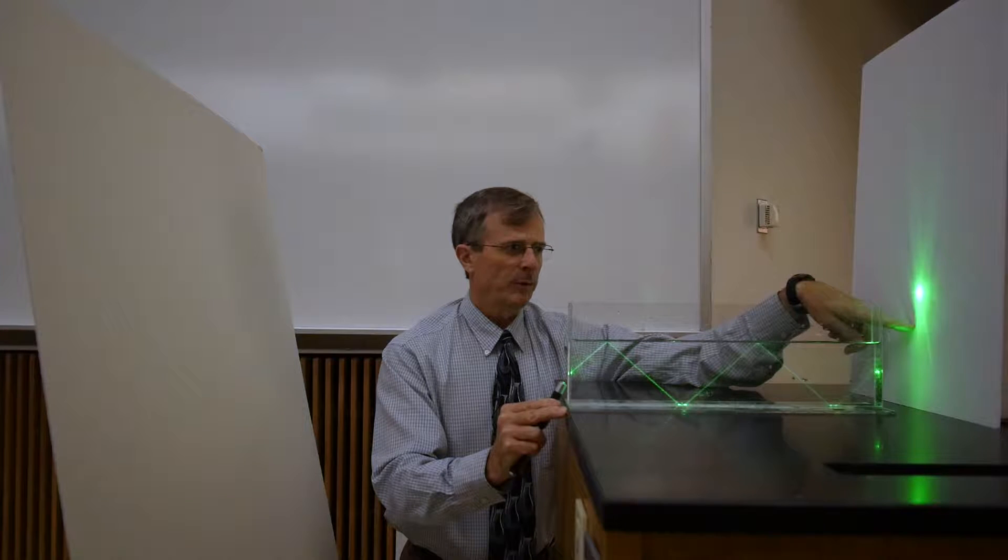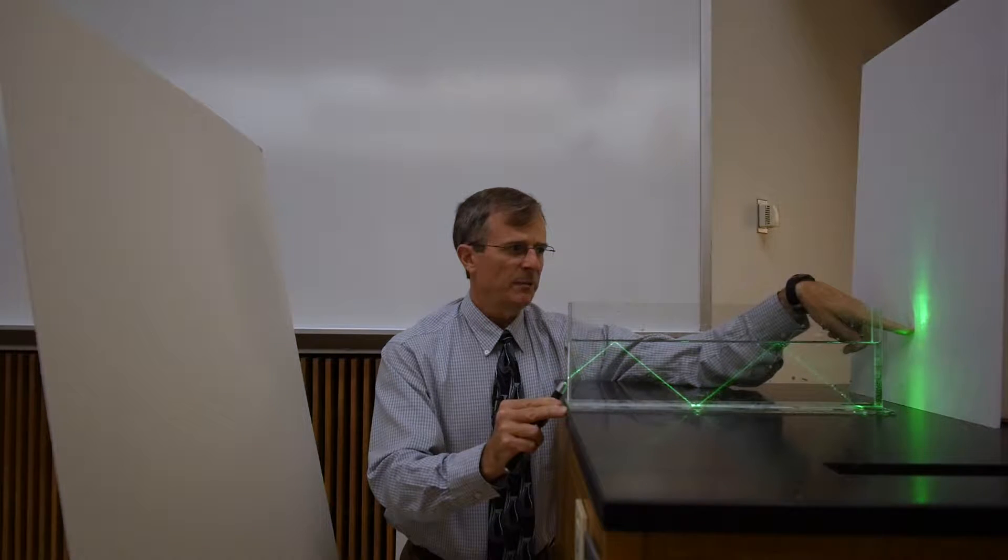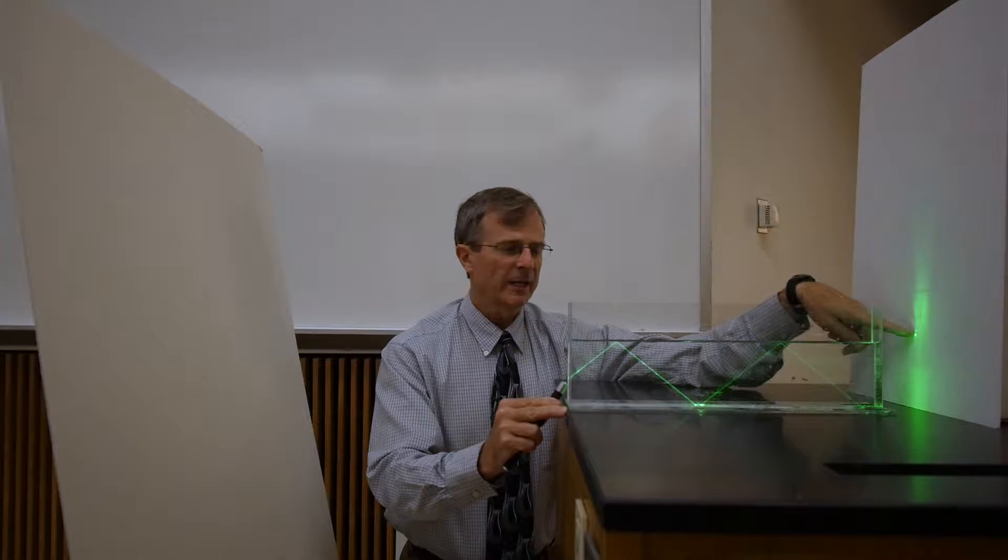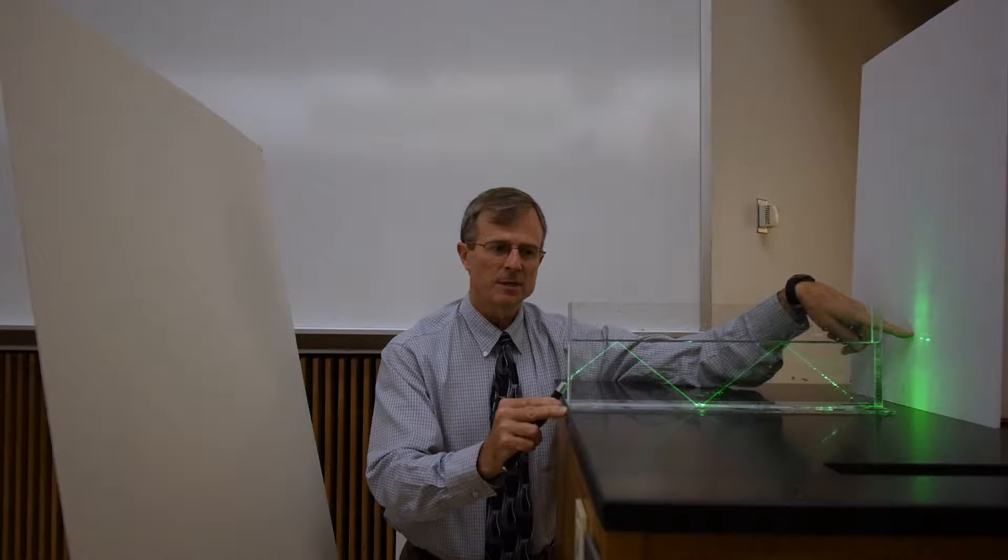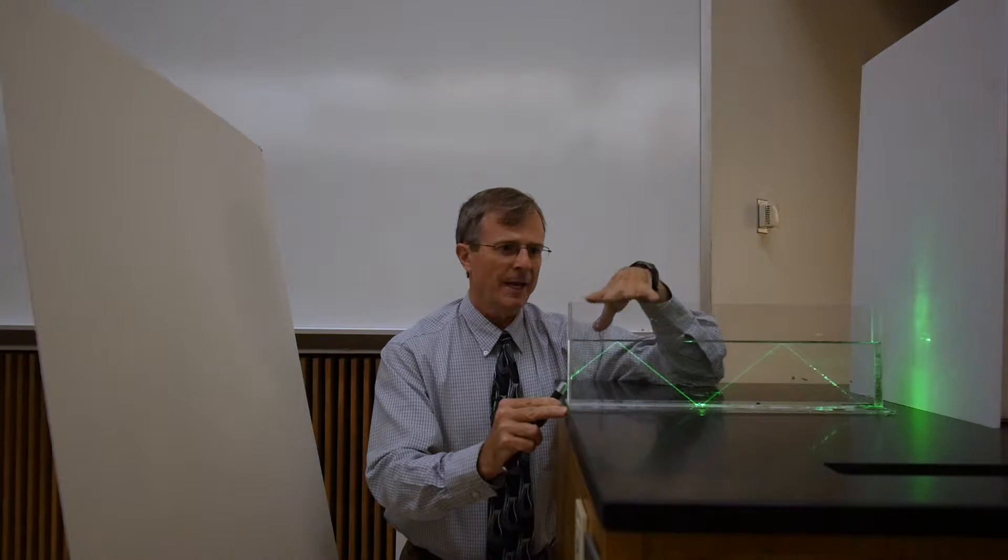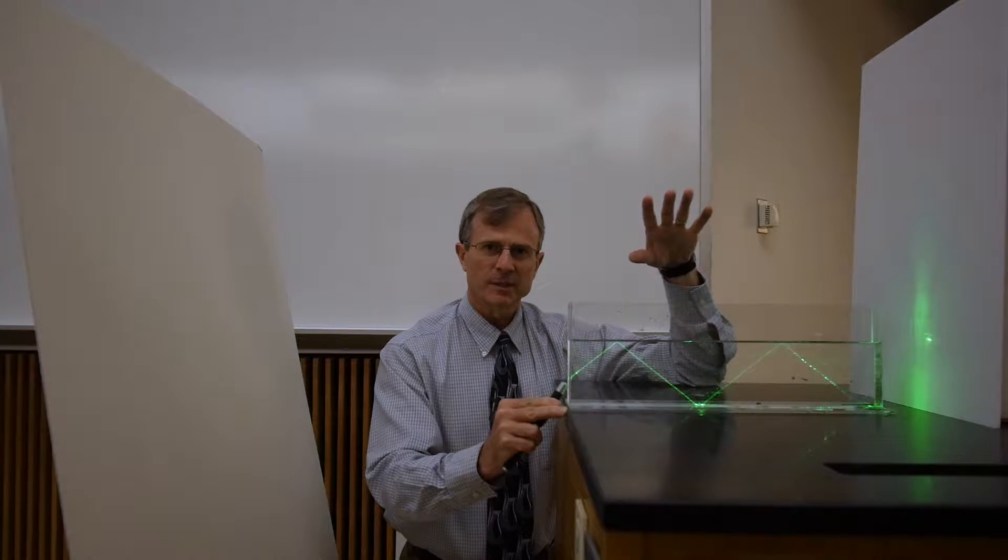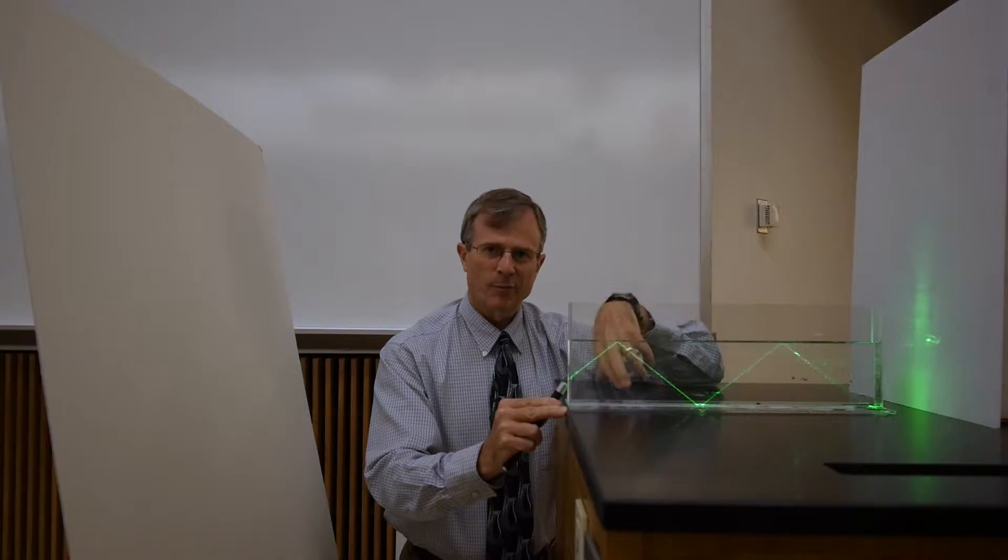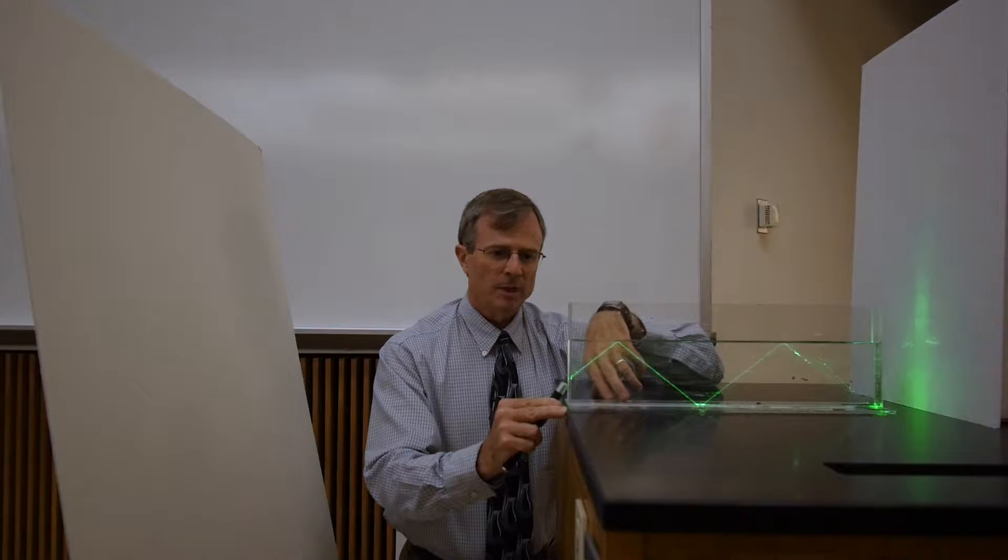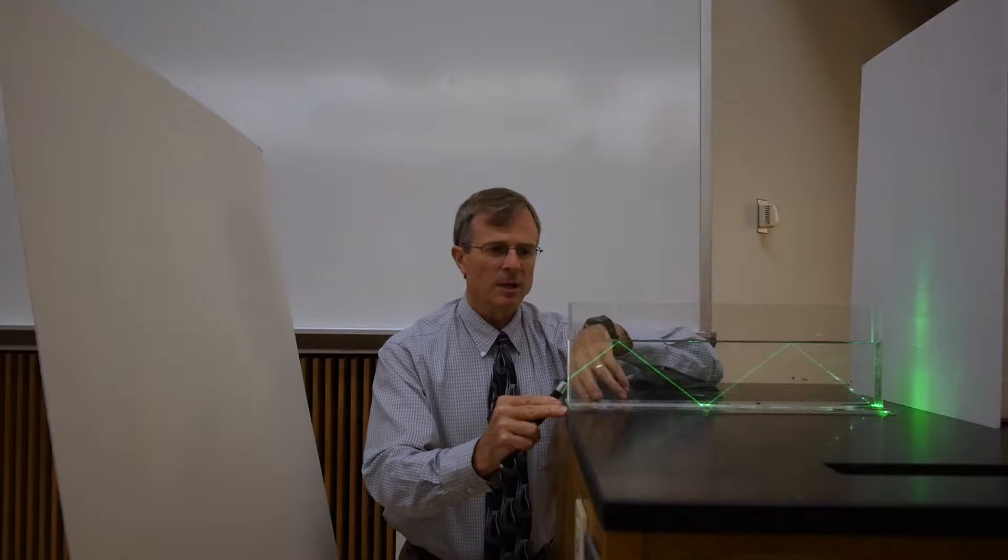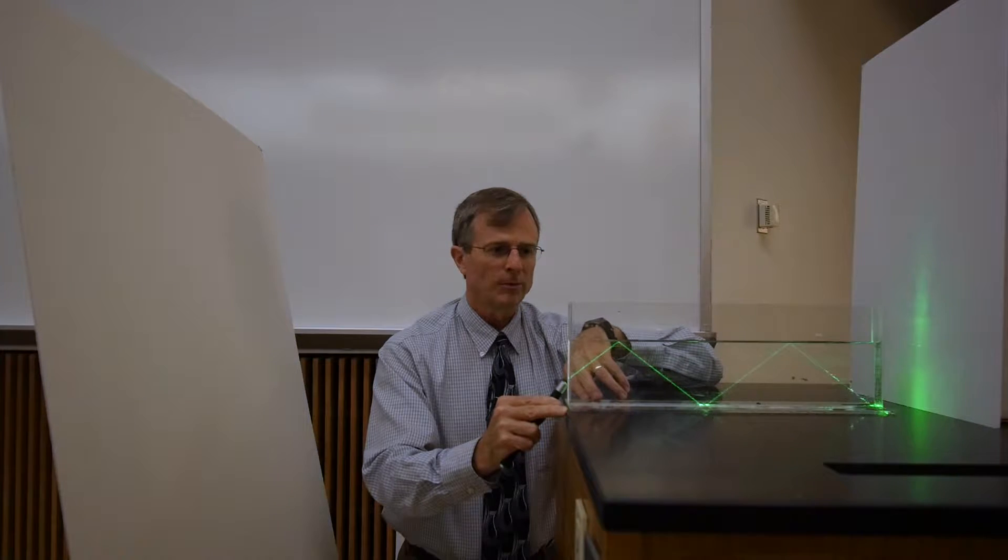And if I go beyond that, then the refracted beam completely disappears. So I no longer get any light above the water surface. All of the light is confined to the region with the water. And this is called the phenomenon of total internal reflection.